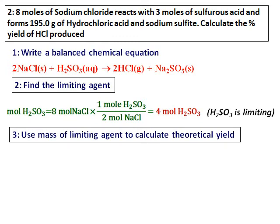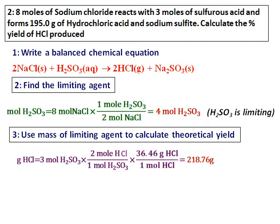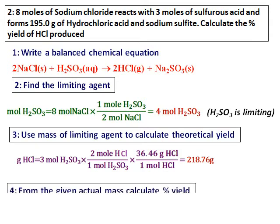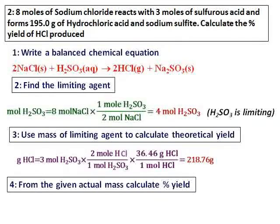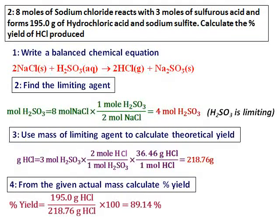Step three: use the mass of the limiting agent to calculate the theoretical yield, which here is the formation of hydrochloric acid. Since hydrochloric acid is in grams, I take the moles of sulfurous acid, convert to moles of hydrochloric acid using the equation, and then convert to grams of hydrochloric acid. The theoretical yield is 218.76 grams. To calculate the percentage yield, actual mass 195 divided by the theoretical yield 218.76 multiplied by 100 gives the percentage yield.